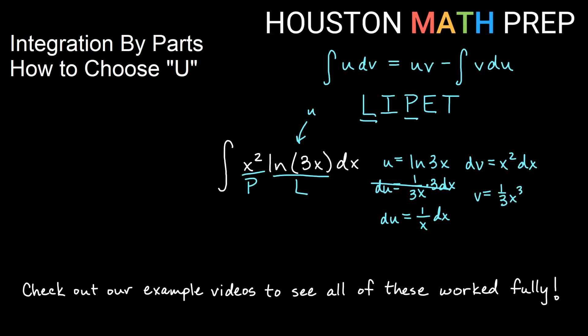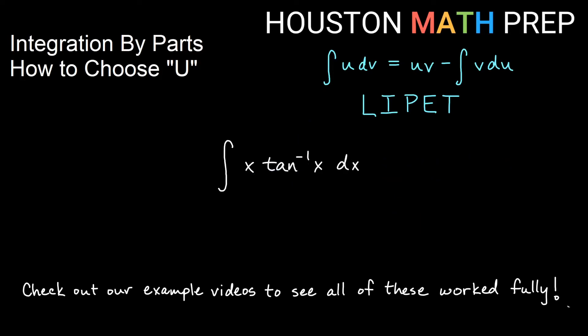Looking at our last example here, we've got x times inverse tangent of x. This x again is a polynomial. This inverse tangent or arctangent is an inverse function. I comes before P in LIPET. So this will be what we choose for our U.